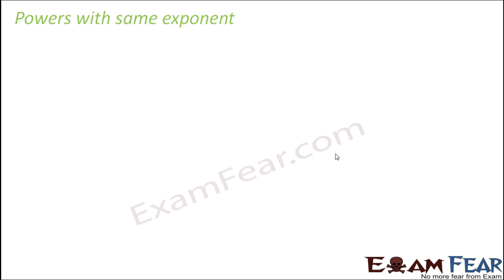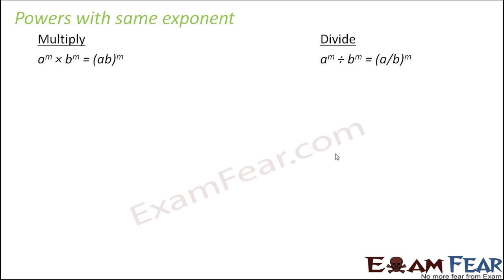Now let's move to the third category: powers with the same exponent but different bases. We look at both multiplication and division scenarios. As per the law, a^m × b^m — where a and b are two different bases but both have the same exponent m — when you multiply two different bases with the same exponent, the product also has the same exponent m. The base of the product is the multiplication of the two bases.